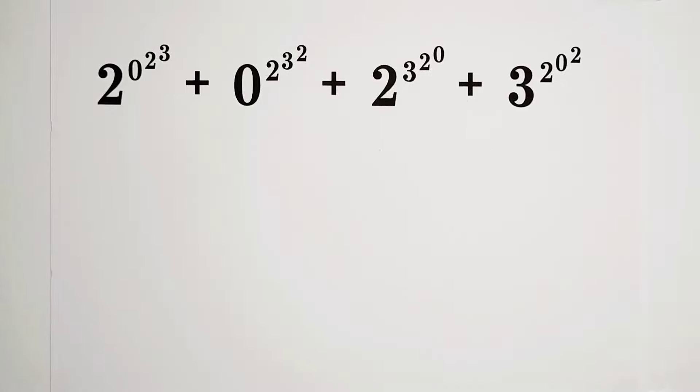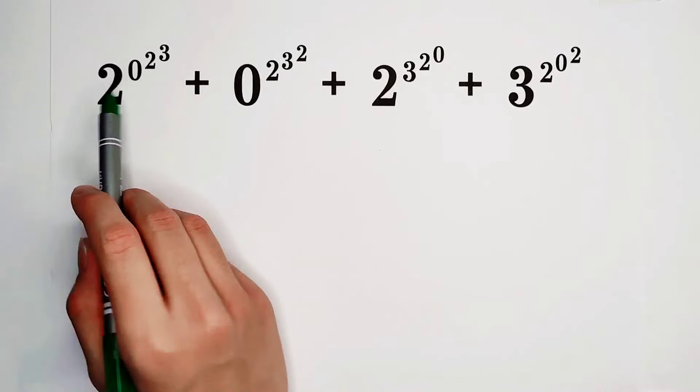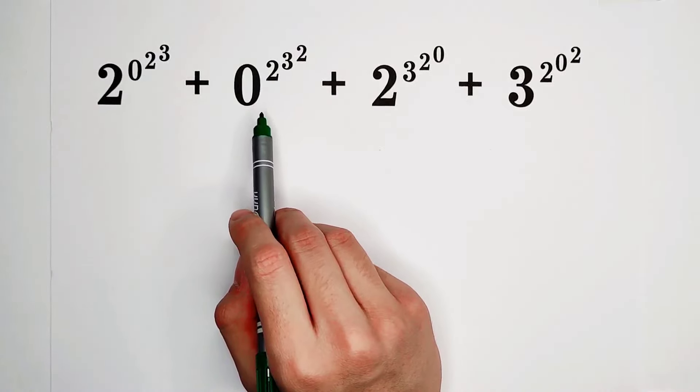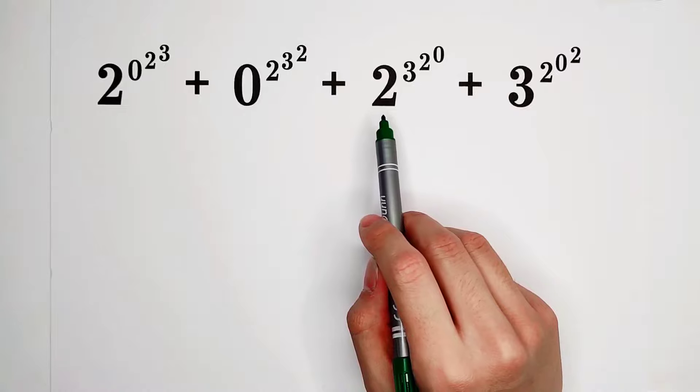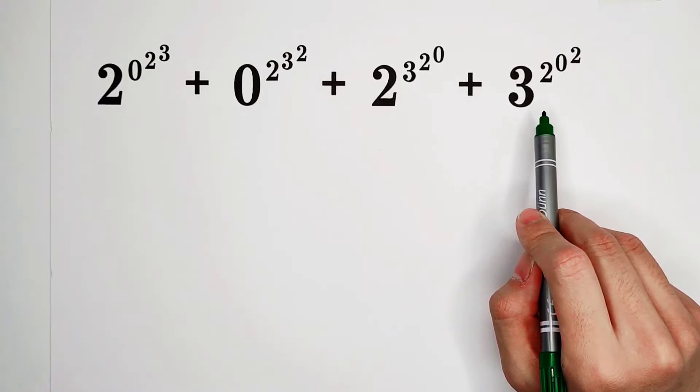This was a question from the Kangaroo Contest in 2023. Calculate 2 to the power of 0 to the power of 2 to the power of 3 plus 0 to the power of 2 to the power of 3 to the power of 2 plus 2 to the power of 3 to the power of 2 to the power of 0 to the power of 2. Oh my god.